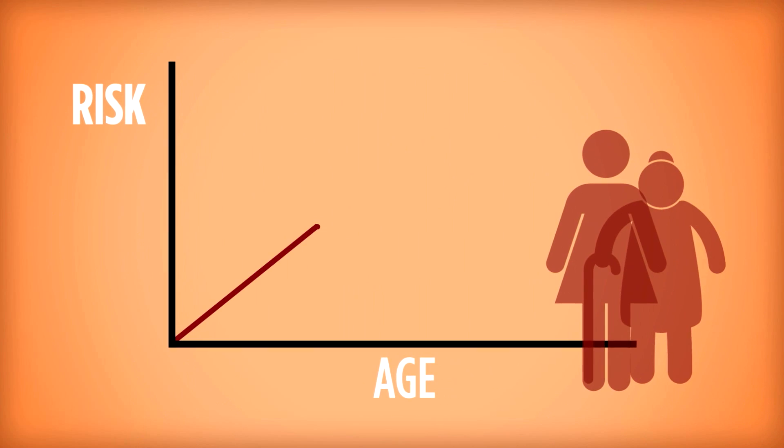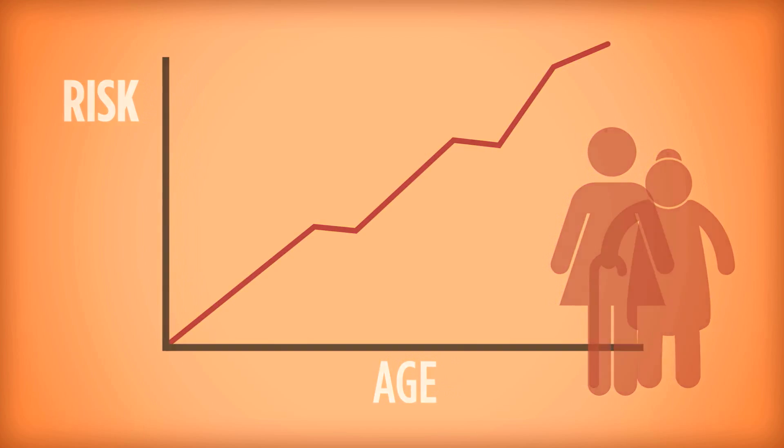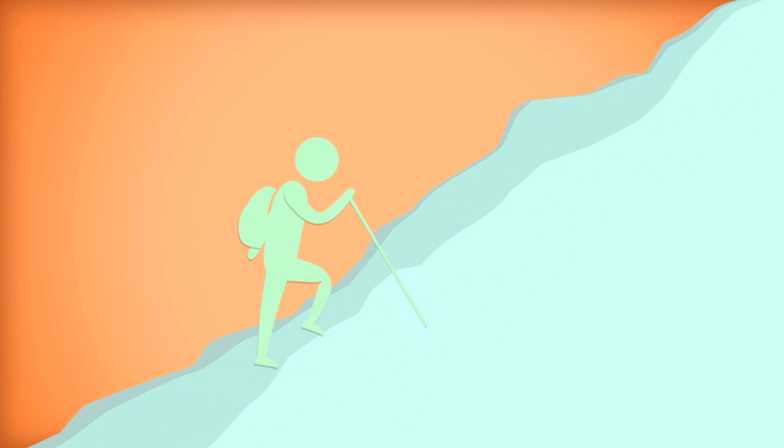Sometimes the cause is unknown although it is known that the risk of AFib increases as we age. Those with AFib have a higher risk for heart failure and stroke but with proper treatment these risks can be managed. Having AFib is certainly not a death sentence and many AFib patients enjoy a healthy and active life.